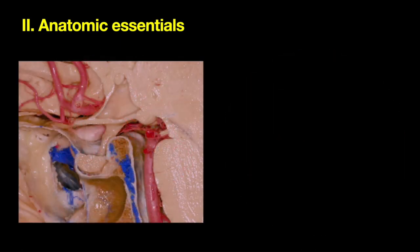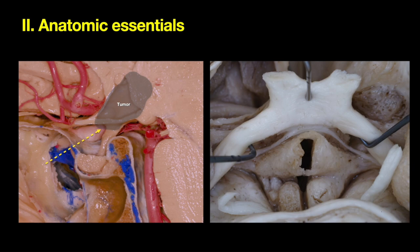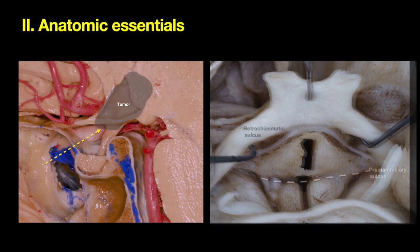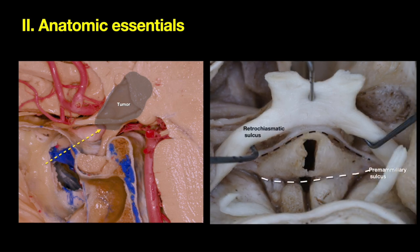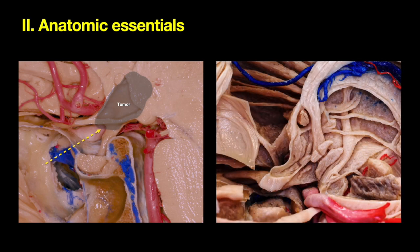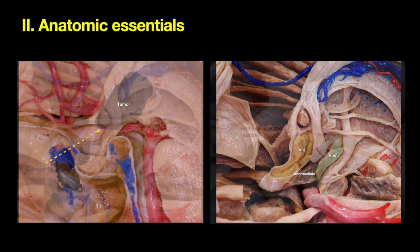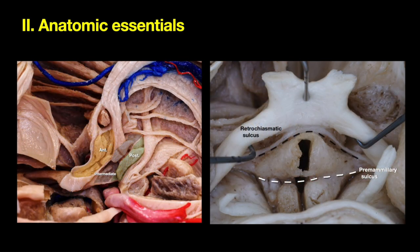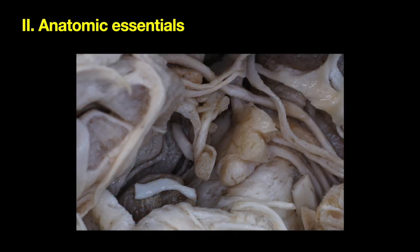Here is the surgical corridor illustrated, giving us access to the location of the tumor in the tuberoinfundibular region. Key to remember are these two landmarks: the retrochiasmatic sulcus and the pre-mammillary sulcus when working in the hypothalamic region. The hypothalamus can be divided into anterior, intermediate, and posterior portions, and these are key landmarks to define these different areas.